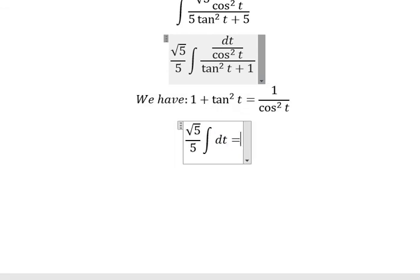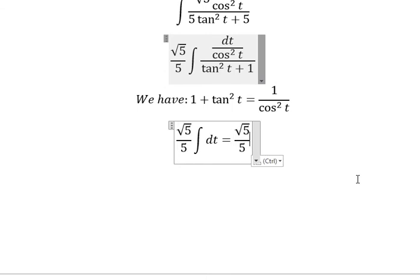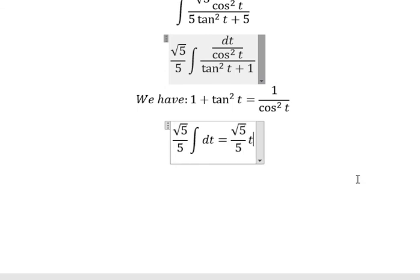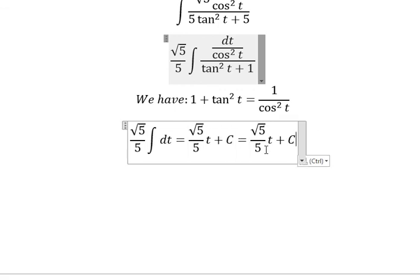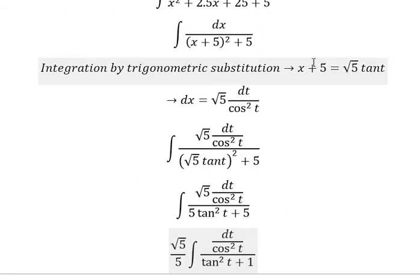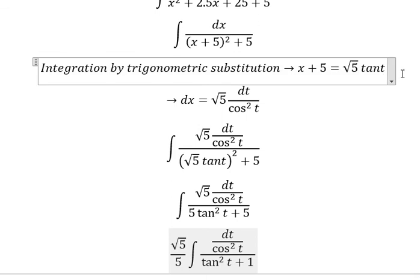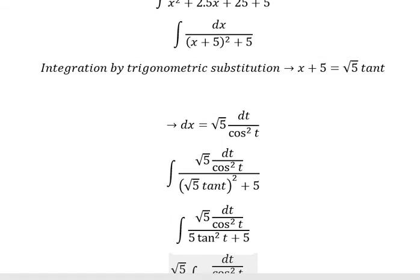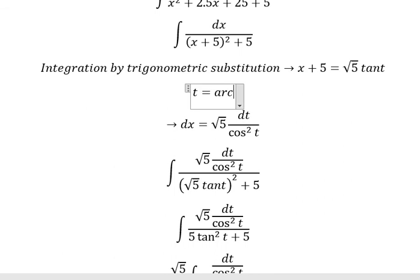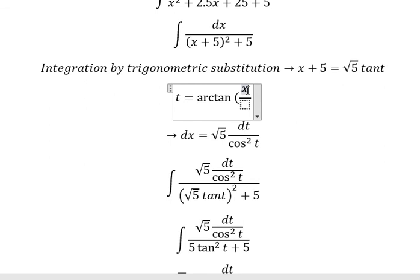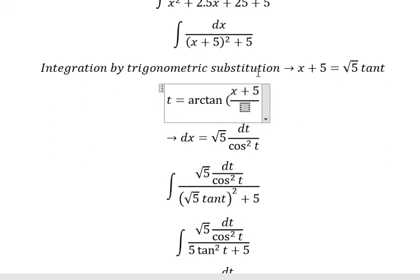Now we have square root of 5 over 5 multiplied by arctan t. We need to change back to x, so t equals arctan. We divide both sides by square root of 5, giving us (x + 5) over the square root of 5.